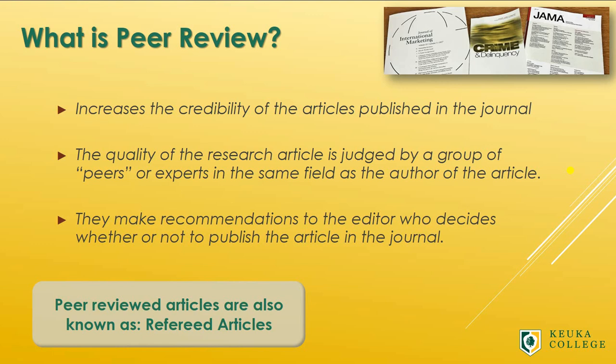Then the editor makes the final determination whether to publish it. This can take a while, which is why the editorial process is longer for peer-reviewed journals. By the way, peer-reviewed articles are also sometimes called refereed articles. To learn more about how to find different kinds of articles using library databases and the web, check out my next video, Popular vs. Scholarly Articles – Finding and Identifying Different Types of Articles. You can find the link to this video in the description below. Happy Researching!